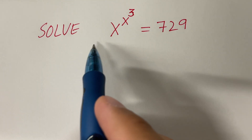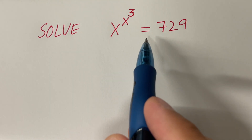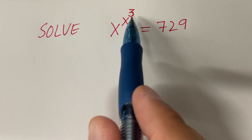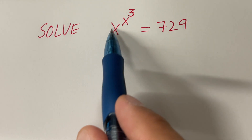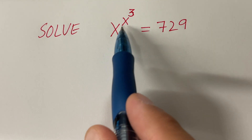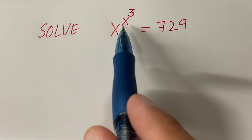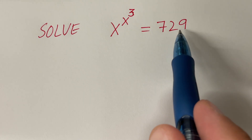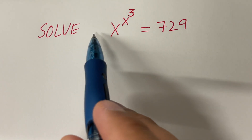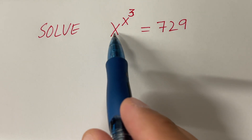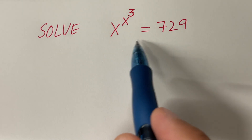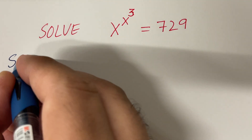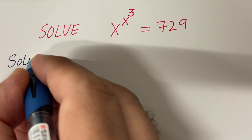Hi everyone, we have this nice equation here. On the left hand side of this equation we have 3 power towers and on the right hand side we have 729, and we want to find x that satisfies this equation. So let's start our solution.